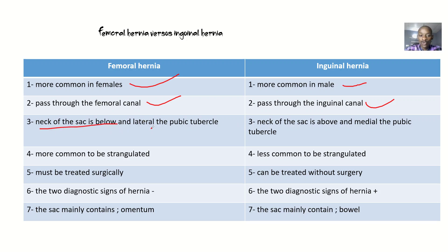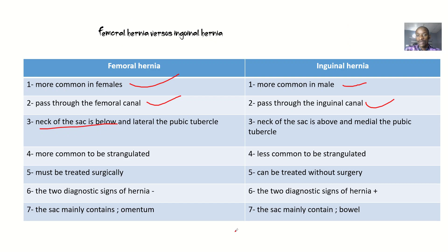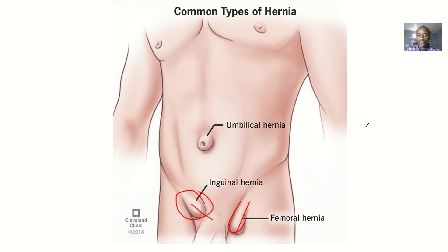In femoral hernia, the neck of the sac is below and lateral to the pubic tubercle, and femoral hernia points downward. In inguinal hernia, the neck of the sac is above and medial to the pubic tubercle, coming medially.